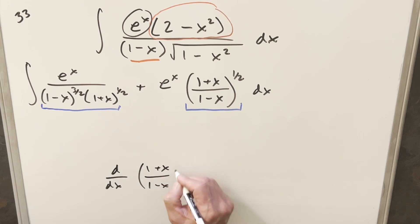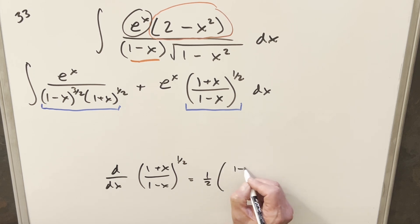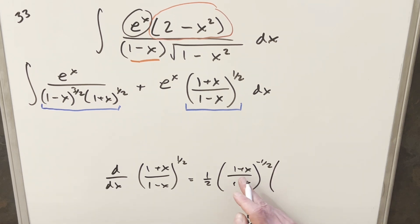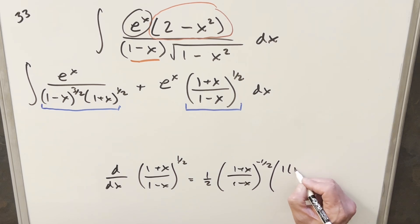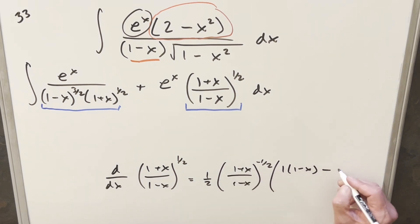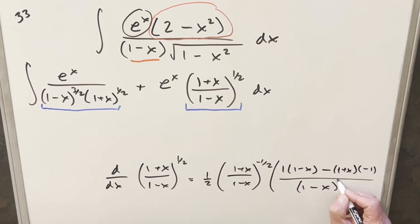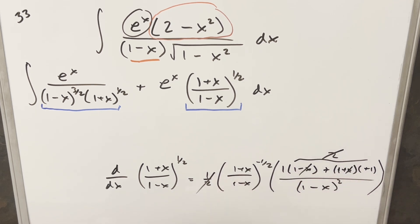What we're going to need first is the power rule on this. When we do that, we're going to have this 1 half up front, then the exponent becomes minus 1 half. For this, we're going to want the quotient rule. The derivative of 1 plus x is going to be just 1, then times the denominator 1 minus x. Then minus — we have the first piece 1 plus x, and the derivative here is just minus 1, all over this denominator squared. Minus times minus gives me a plus right here. When you add everything up, the x's are going to cancel. We're going to have 1 plus 1, so this whole thing becomes 2. I can cancel this 2 with this 1 half right here.